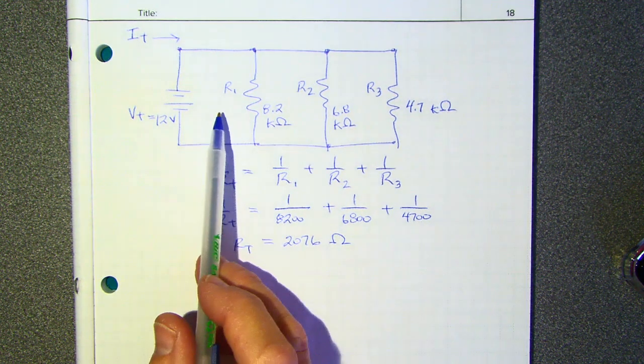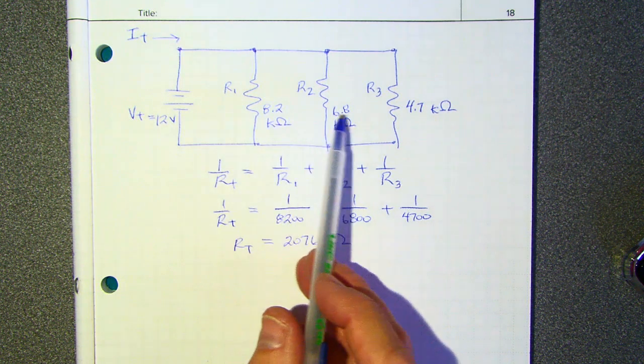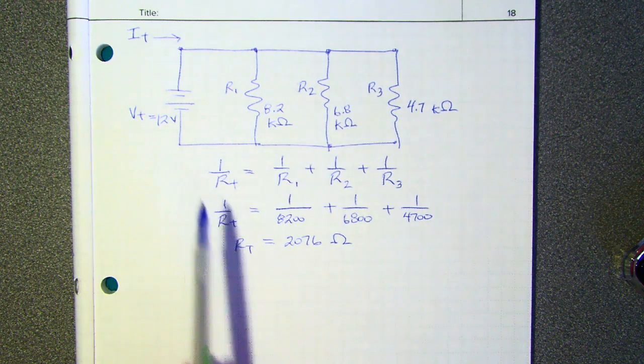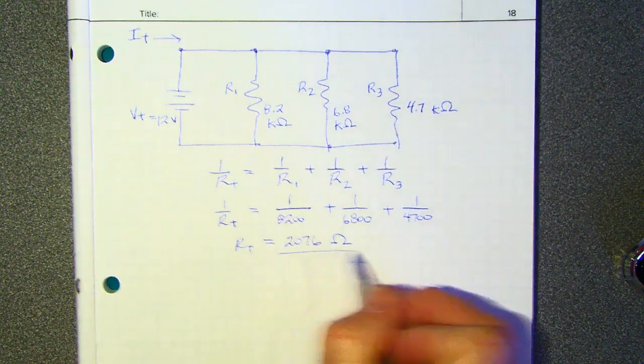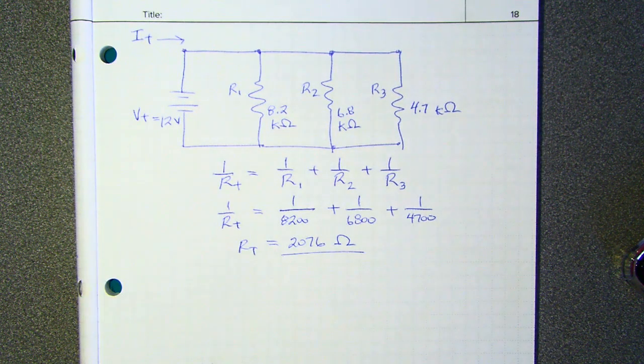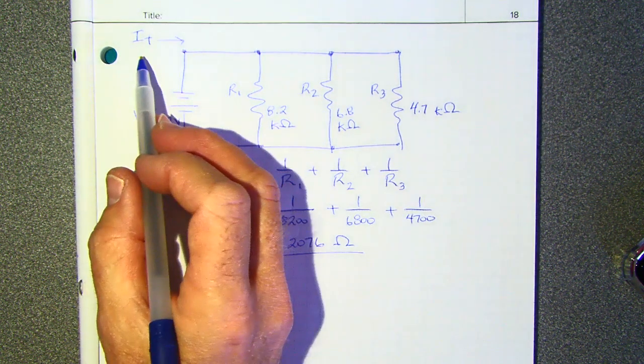And so all we've done so far is we took the three resistors and found out that the total resistance for a parallel circuit is 2076 ohms. And so what we need to do next is figure out the total current.